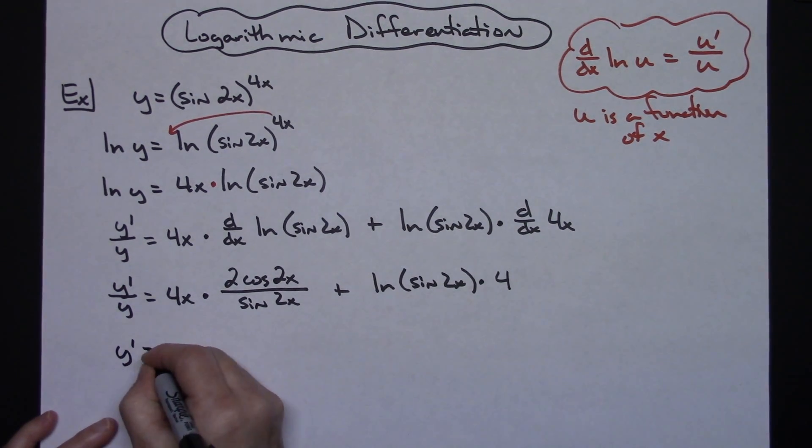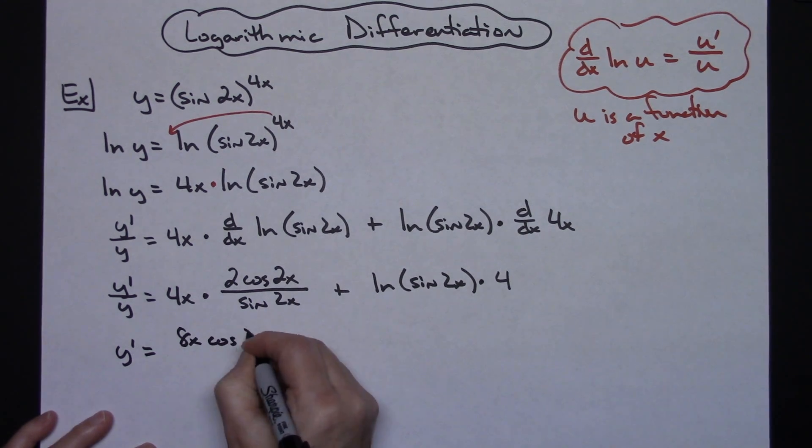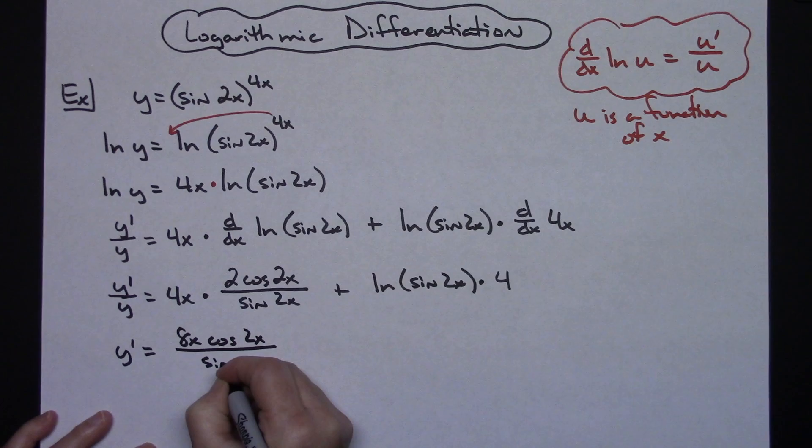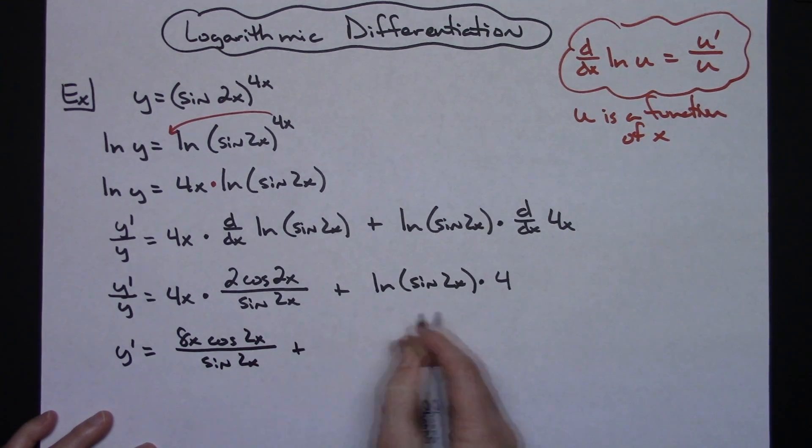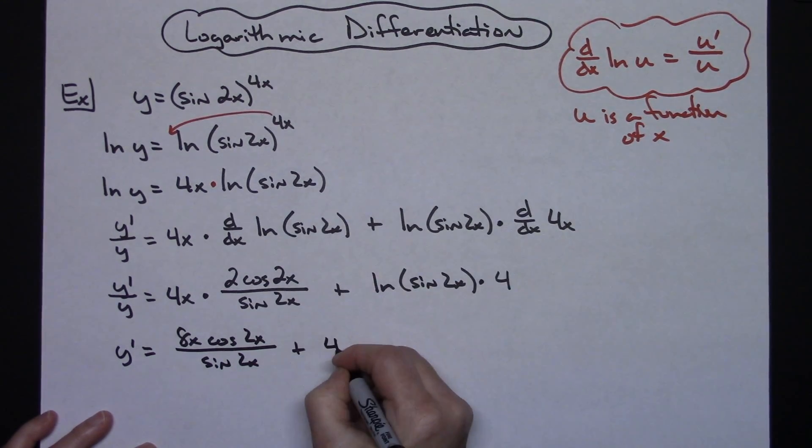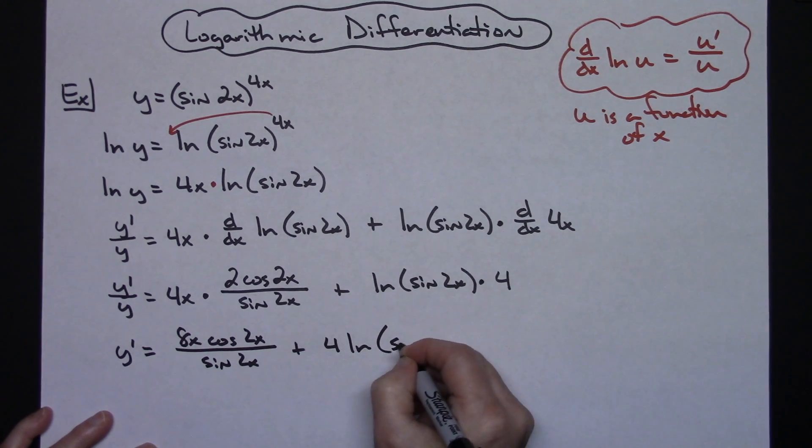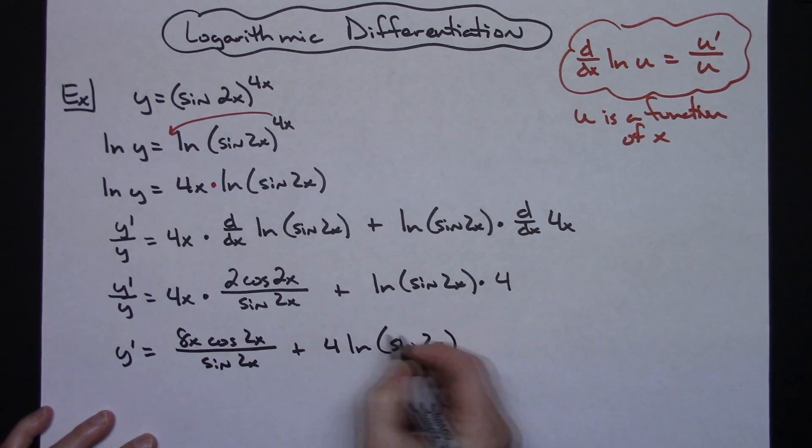So y prime is equal to, cleaning this up, 8x cosine 2x all over sine 2x plus, bringing the 4 in front, 4 natural log sine 2x.